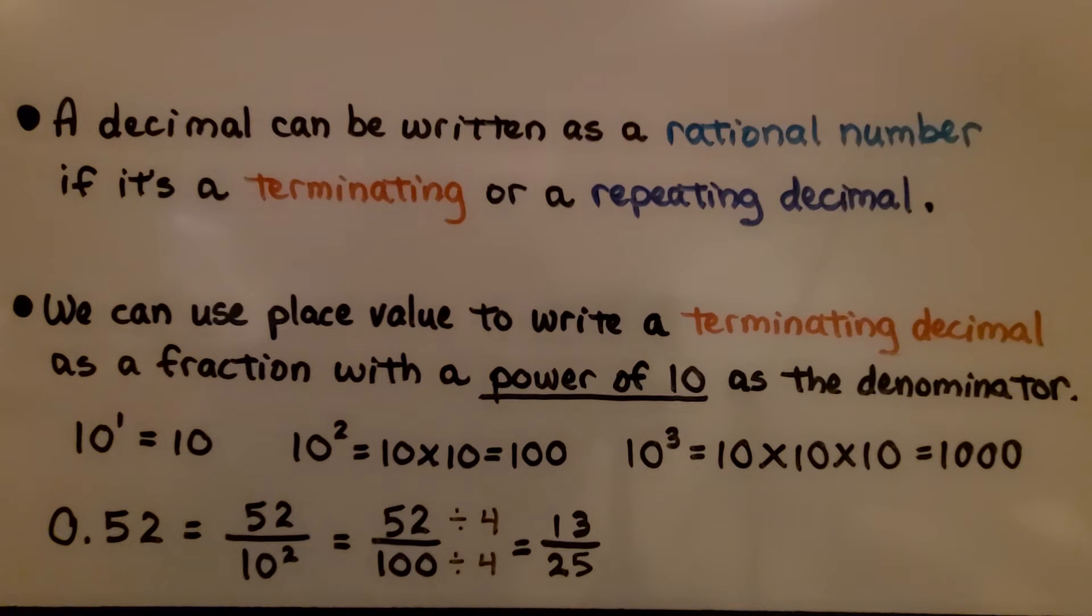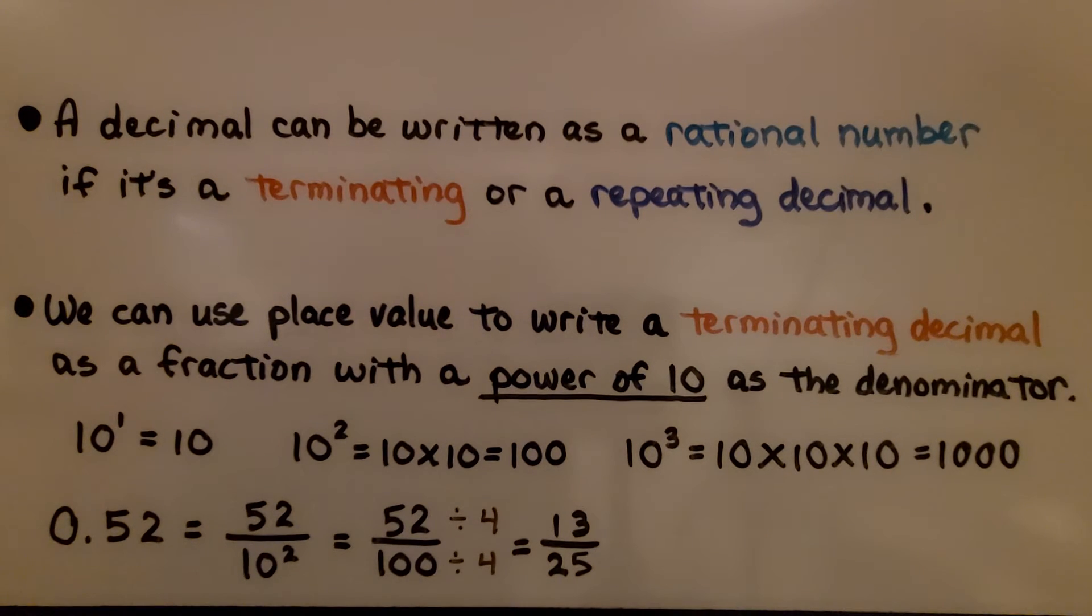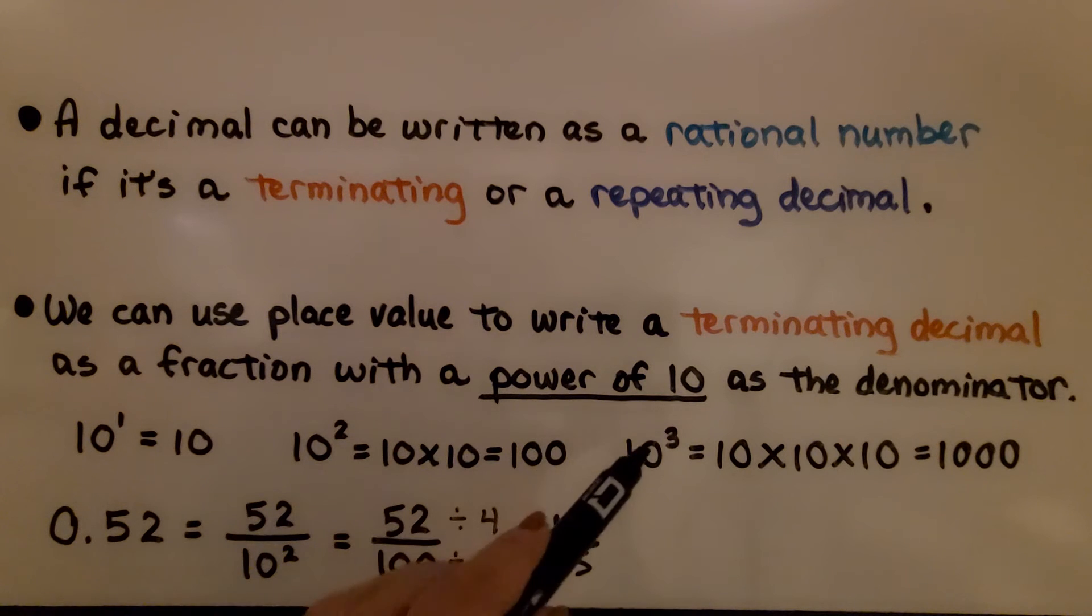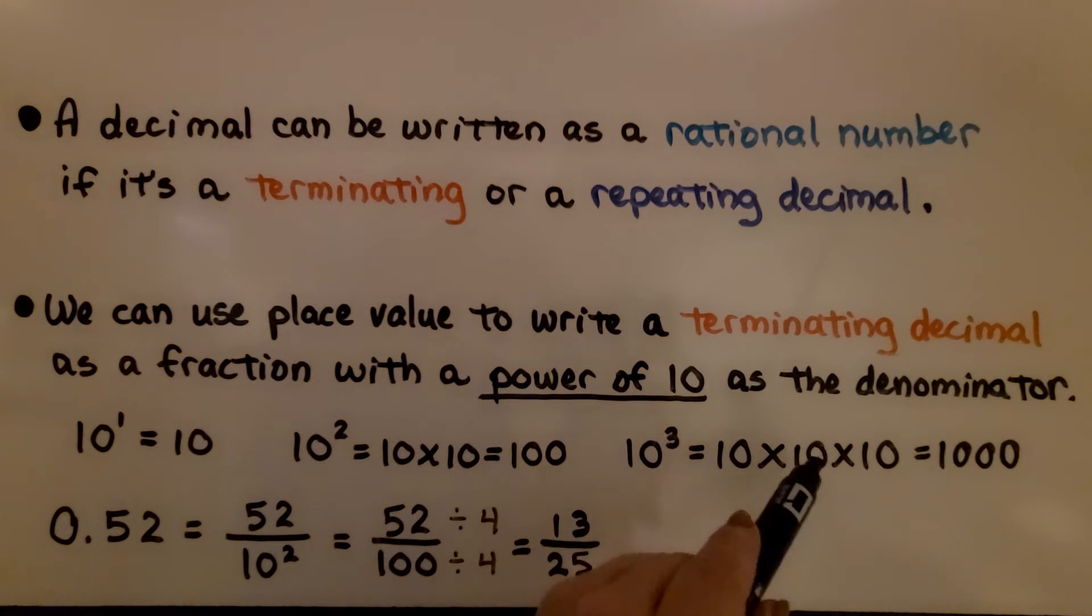A decimal can be written as a rational number if it's a terminating or repeating decimal. We can use place value to write a terminating decimal as a fraction with a power of 10 as the denominator. So, remember, 10 to the first power is equal to 10. 10 to the second power, that's 10 times 10, that's 100. 10 to the third power means 10 times 10 times 10, that's 1000.